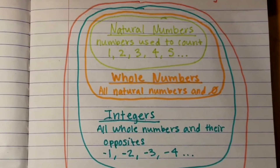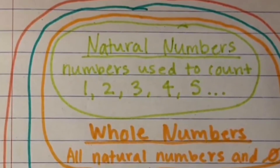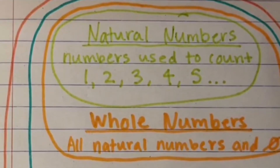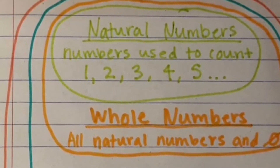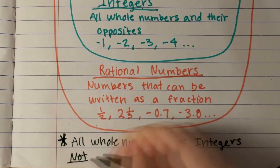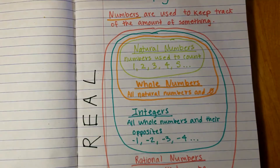Here is a rundown of the whole video in 30 seconds or less. When we were younger, we learned how to count using counting numbers, also known as natural numbers. All natural numbers are whole numbers. All whole numbers are integers. All integers are rational. All rational are real. If you can say it, then you know it. If you know it, you can teach it. And if you can teach it, then you are ready for the test. Thank you for watching the video today.